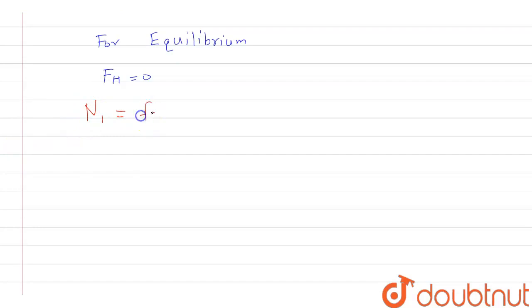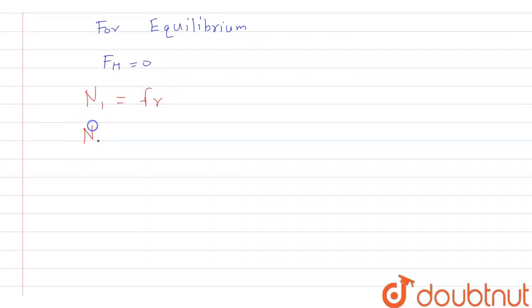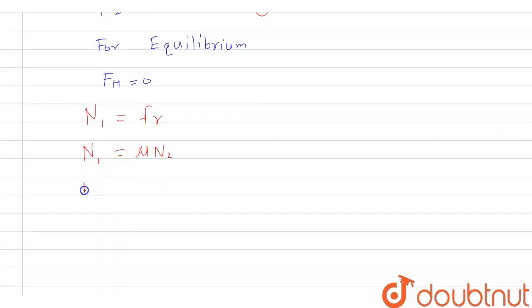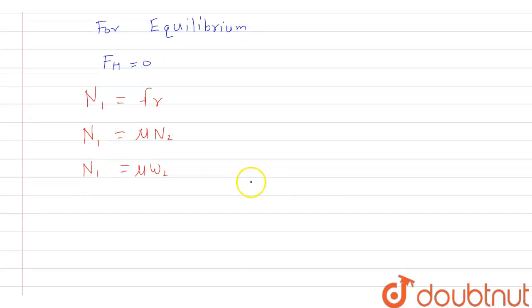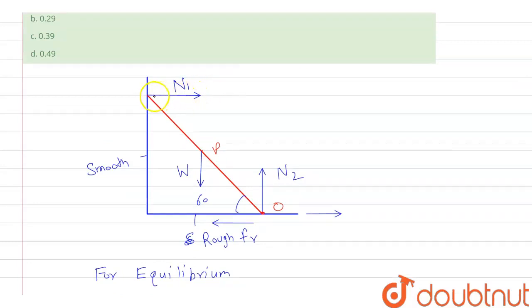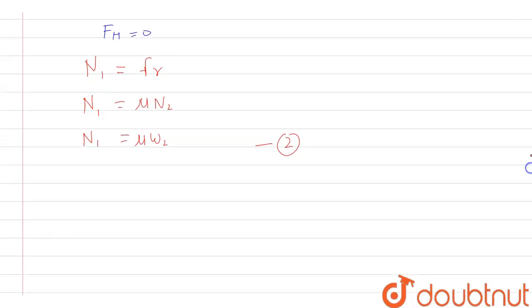Since fr acts on the surface where N2 is the normal reaction, we have fr equals mu times N2. This gives us N1 equals mu times N2, which is equation 1. From equation 1, since N2 equals W, we get N1 equals mu times W — call this equation 2. Now we take the moment about point O at the base. The forces at O do not contribute to torque; only forces at points P and Q contribute, and their net moment equals zero.